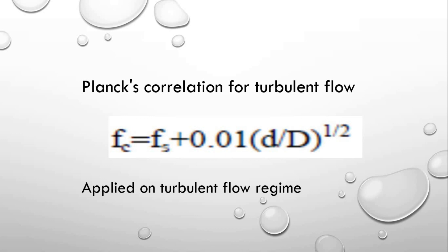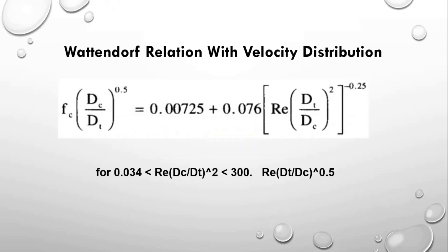The second equation is the Wett and Draw correlation with velocity distribution. This equation uses velocity distribution, the Dean number, and other factors. We can see the various conditions and application range for the Wett and Draw relation.